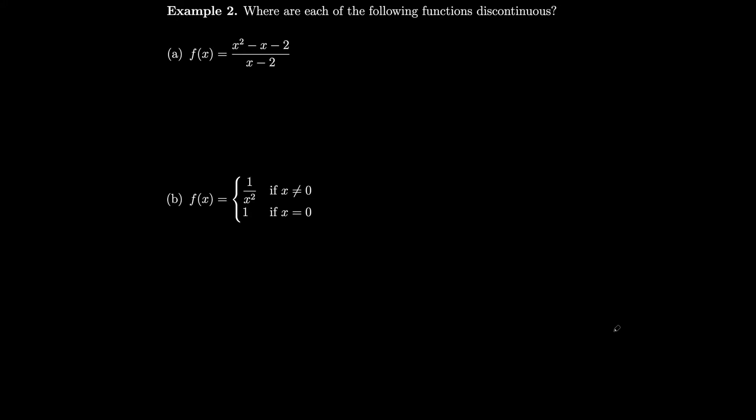Where is the function f(x) = (x²−x−2)/(x−2) discontinuous? We know that if a function is not defined, it can't equal its limit there. This function is undefined when the denominator is 0, which is when x=2. So f(2) is not defined, which implies f is discontinuous at 2.